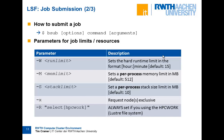You can also request exclusive node access with '-x', but please use this only when you truly need it. If you submit a serial job with '-x' on a 12-core system, you block other users and waste resources. For larger parallel jobs, exclusive access is set by default anyway — if you have 30 processes, you will have the system exclusively regardless.